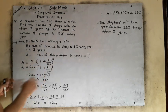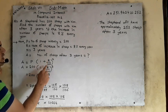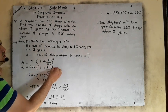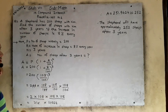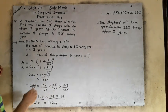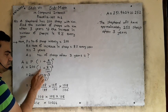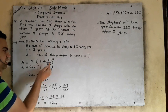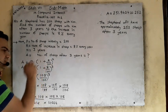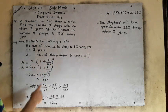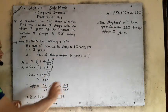Now we will put the values. Principal 200, then (1 + 8 upon 100) bracket raised to 3, since N equals 3 years. Now we will solve the bracket first. 100 ones are 100 plus 8 — you will add. So 100 + 8 gives 108 upon 100, raised to 3 — we will write it 3 times.